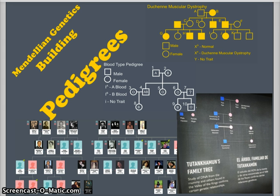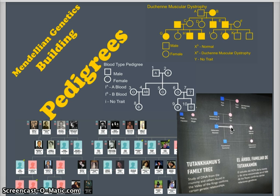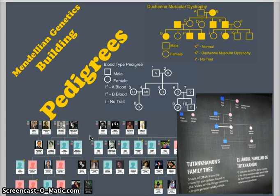We have here a blood typing pedigree in the center. The pedigree in the upper right is for Duchenne muscular dystrophy, which is a sex-linked trait, and we'll review what sex-linked means. This is a pedigree from Tutankhamen, showing the relationship of Egyptian royalty and how Nefertiti was related to Tutankhamen. And this is an Ancestry.com pedigree — this happens to be the pedigree for my family.